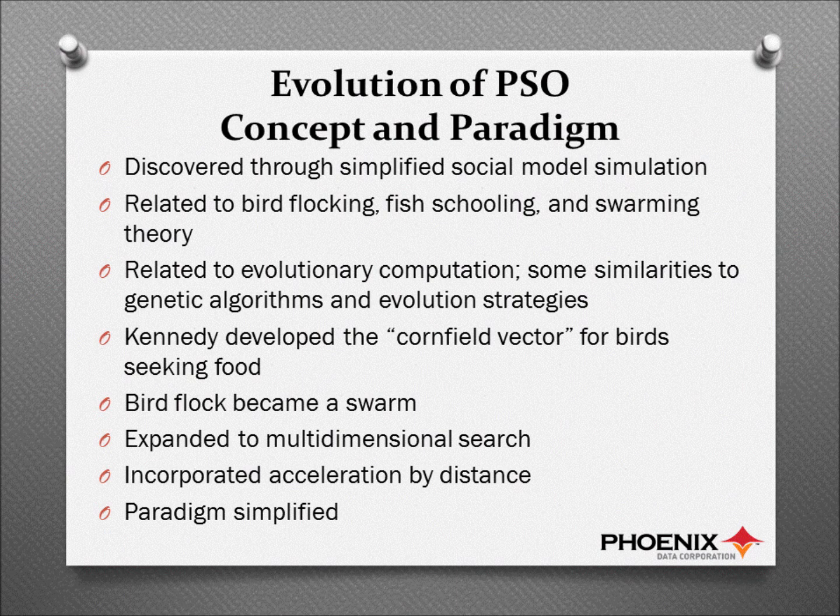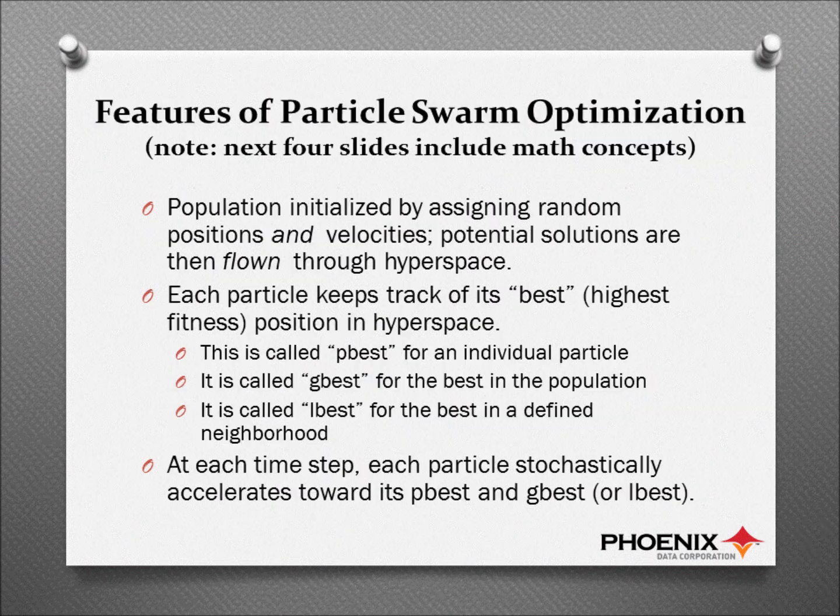We started writing code. We tried to use genetic algorithms, which was the leading optimization tool in that field at the time, and just couldn't make genetic algorithms work. So we started writing our own C code, and about 300 lines of code later, we had something that looked interesting. We reduced the basic algorithm to two lines of computer code, and that's what we're still working with today.